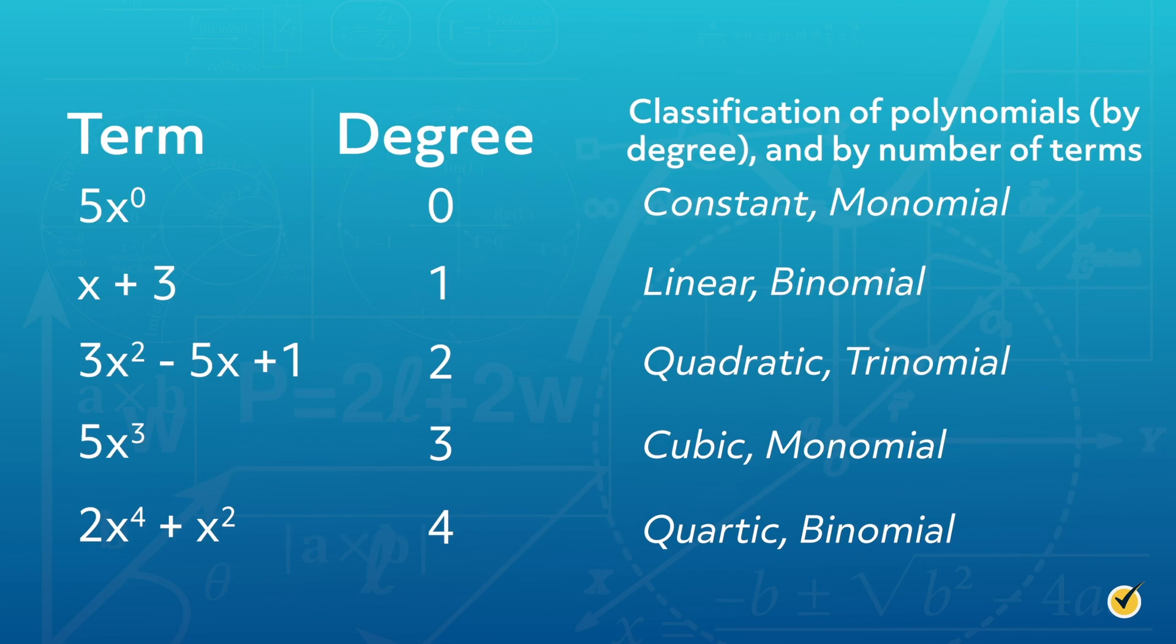The degree, or the highest exponent of the polynomial, is also used as a distinguishing feature in the function. It is important to note that a constant can be viewed as a monomial with a variable raised to the power of 0. If any number or expression raised to a power of 0 is equivalent to 1, then it follows that the term 5 times x to the 0 simplifies to 5 times 1 equals 5. Here's a list of polynomials named by degree.